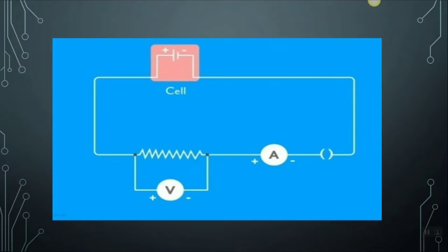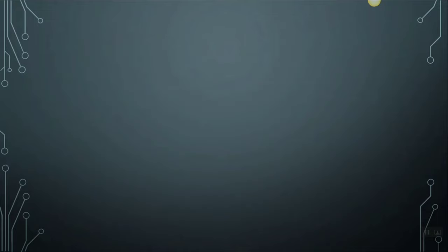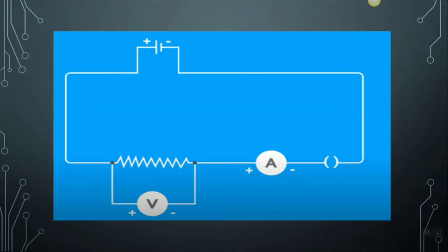First we form a circuit which has just one cell as the source. Here we have a nichrome wire which will be the resistance. We have an ammeter connected in series. We also have a voltmeter connected in parallel, along with a plug key. We close the plug key and note down a few readings — the readings in the ammeter and in the voltmeter. Let the current and the potential difference be I1 and V1 respectively.